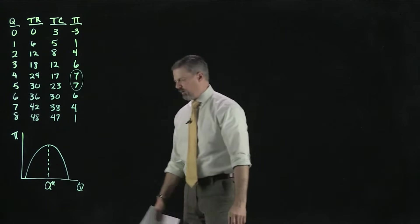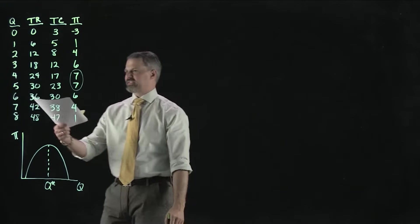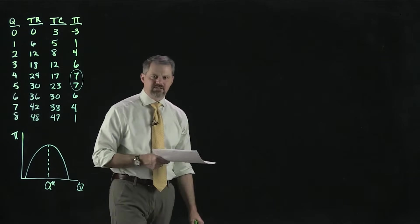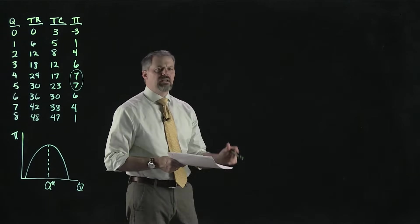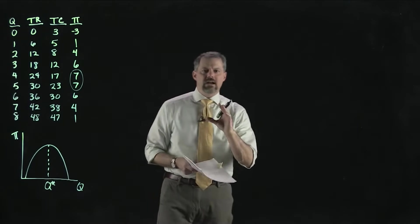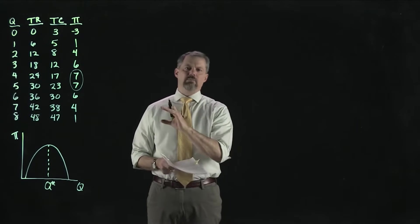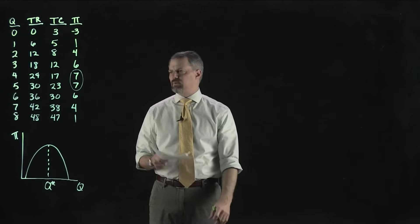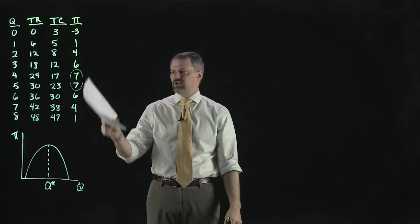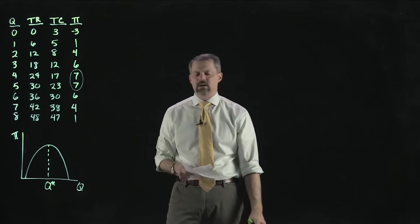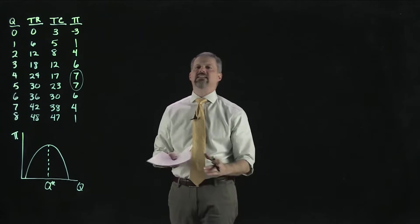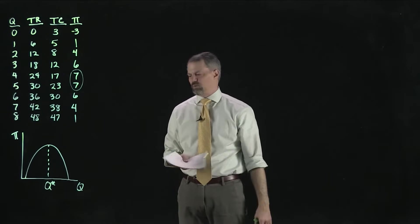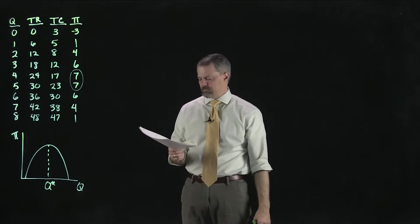From this table we can tell the firm should produce four or five gallons of milk. We can narrow this down more, but just by looking at the profit numbers we get a good idea of where this firm will want to be.